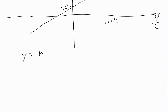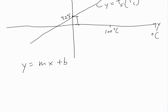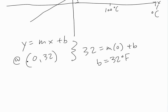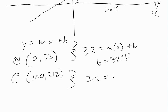We know that y = mx + b, where m is the slope and b is the y-intercept. Plugging in the coordinate (0, 32): 32 = m × 0 + b, so b = 32 degrees Fahrenheit. To find m, we use the point (100, 212): 212 = m × 100 + 32.